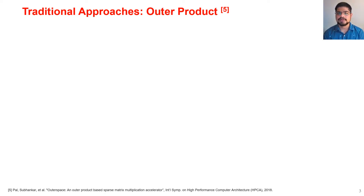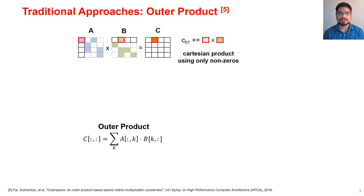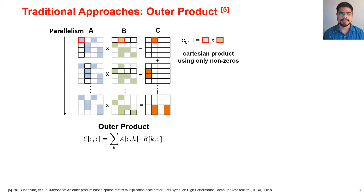Another common approach is the outer product approach. In this approach we take a column of matrix A and a row of matrix B and perform an outer product to produce the entire partial sum matrix for C. Because the column of A has only one non-zero value and the row of B has only one non-zero value, the outer product results in a partial sum matrix where only one element is non-zero. The parallelism comes from the fact that different outer products and partial sum matrices can be produced in parallel.